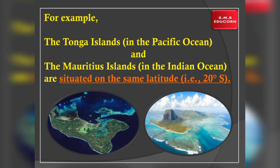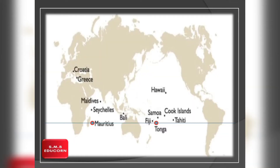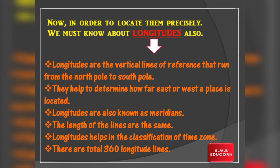For example, the Tonga island in the Pacific Ocean and the Mauritius island in the Indian Ocean are situated on the same latitude, that is 20 degree south. Yaani ki, jaise ki aap ko is image me dikh raha hoga ki Indian Ocean me situated Mauritius island aur Pacific Ocean me situated Tonga island — dono hi place southern hemisphere ke 20 degree latitude me located hai. Ab aap mujhe ye batao, agar ye dono location 20 degree south latitude me located hai, toh kya dono location same hi jagah honge? Aur kya image me aapko dono place same jagah par dikh raha hai? Nahi na. Toh ab in dono place ka exact location nikalne ke liye sabse pehle hum latitude toh samajh chuke hai, ab hum longitude ko bhi samajh lete hai.